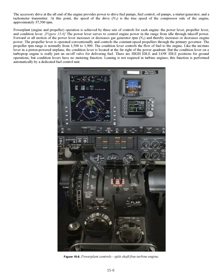Inlet air enters the engine via a circular plenum near the rear of the engine and flows forward through the successive compressor stages. The flow is directed outward by the centrifugal compressor stage through radial diffusers before entering the combustion chamber, where the flow direction is actually reversed. The gases produced by combustion are once again reversed to expand forward through each turbine stage. After leaving the turbines, the gases are collected in a peripheral exhaust scroll and discharged through two exhaust ports near the front of the engine. A pneumatic fuel control system schedules fuel flow to maintain the power set by the gas generator power lever. The accessory drive at the aft end of the engine provides power to drive fuel pumps, fuel control, oil pumps, a starter/generator, and a tachometer transmitter. At this point, the speed of the drive, N1, is the true speed of the compressor side of the engine, approximately 37,500 RPM.